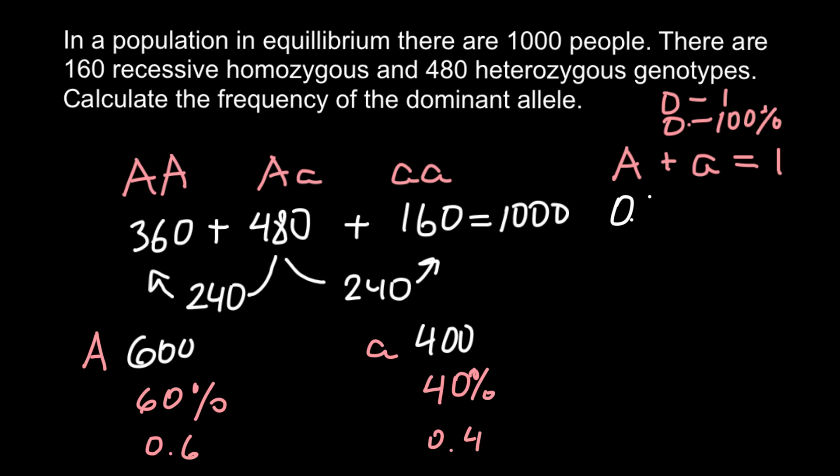And frequency of the recessive allele would be 40% or 0.4. We can put these numbers here also. So frequency of this allele would be 0.6 and the frequency of the recessive allele would be 0.4. If you add these two numbers we get 100%.